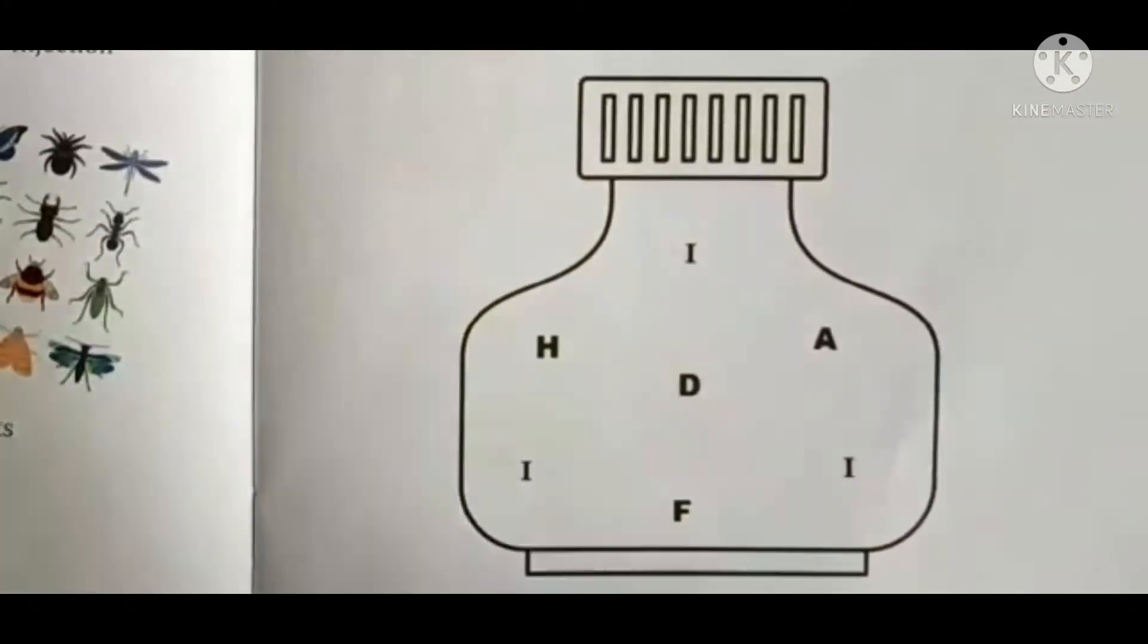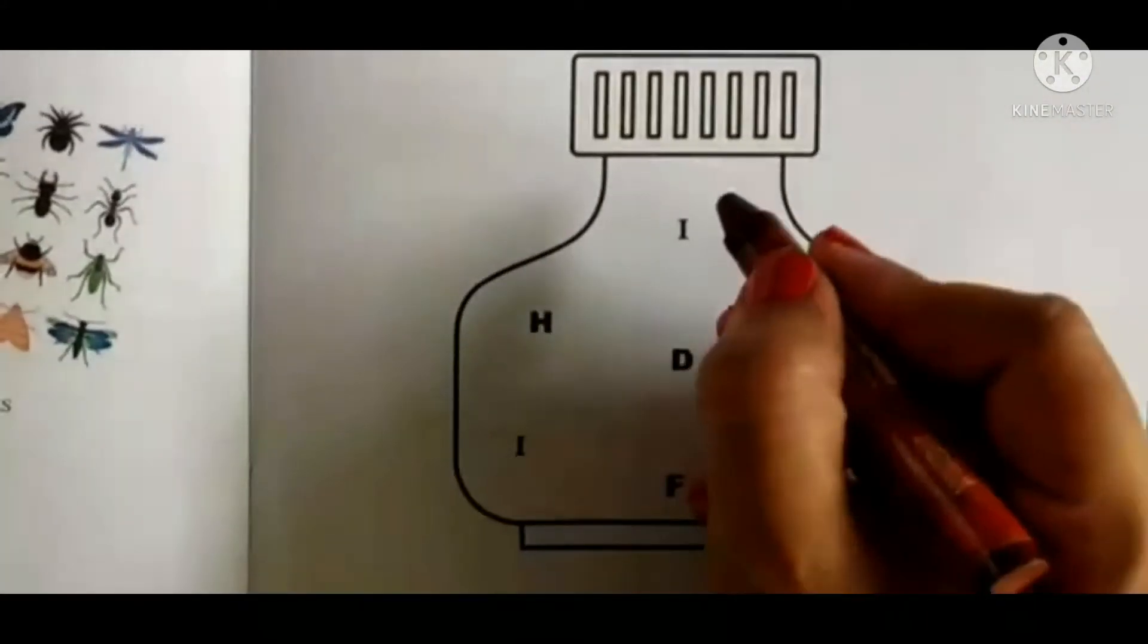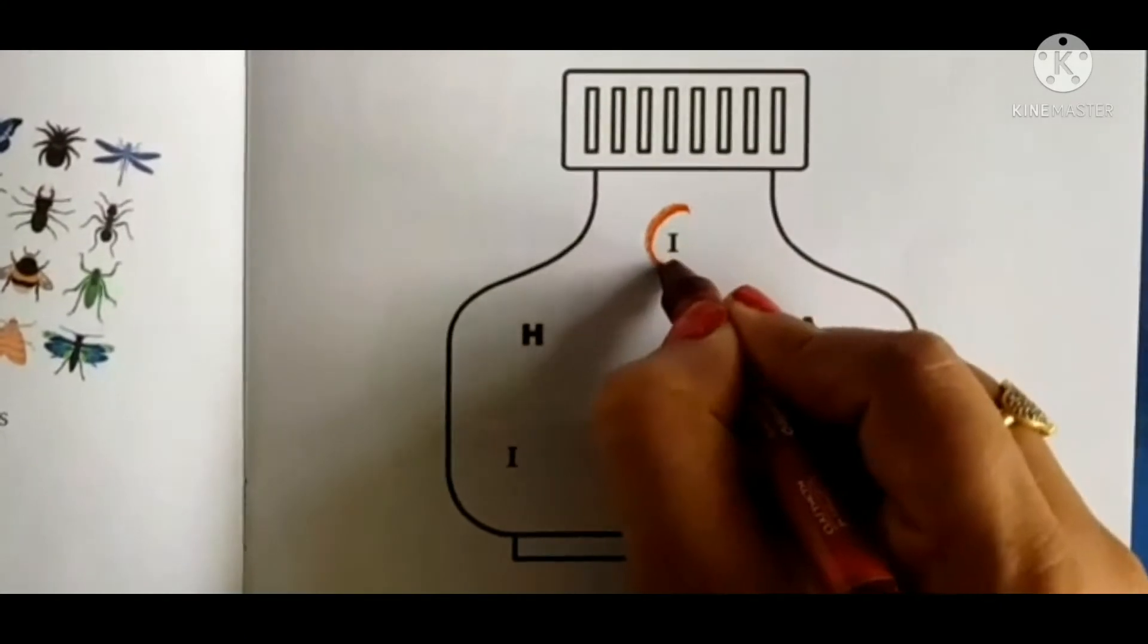Chalo, hum sabse pehle dekhenge letter I kahan par hai. Here is letter I. So we will circle letter I.